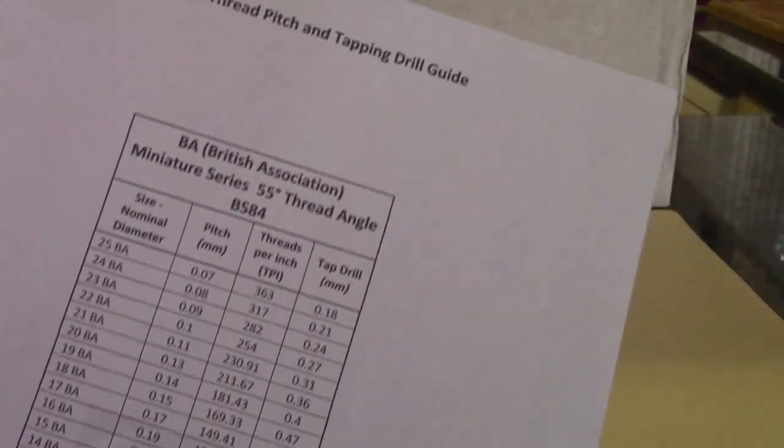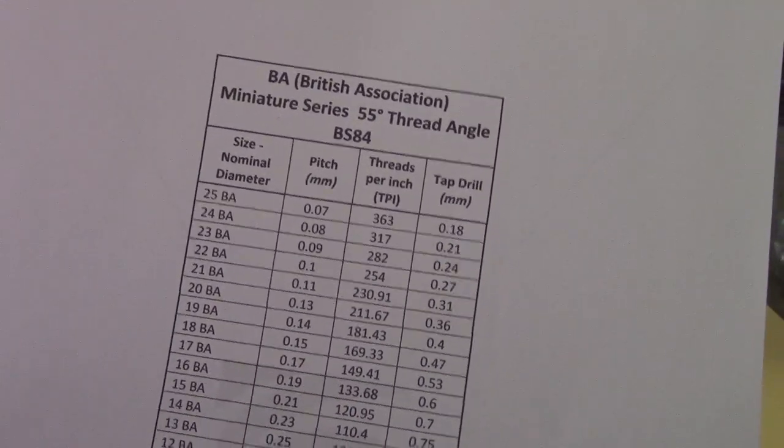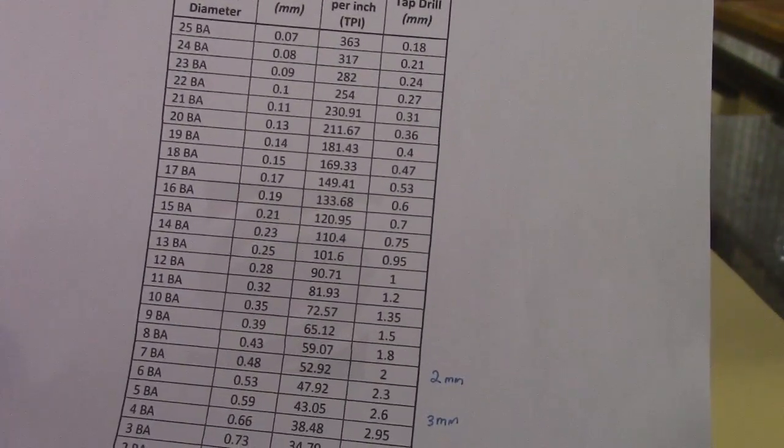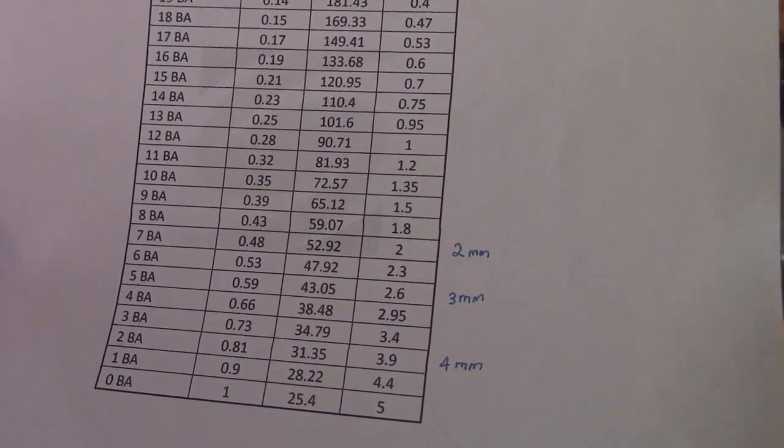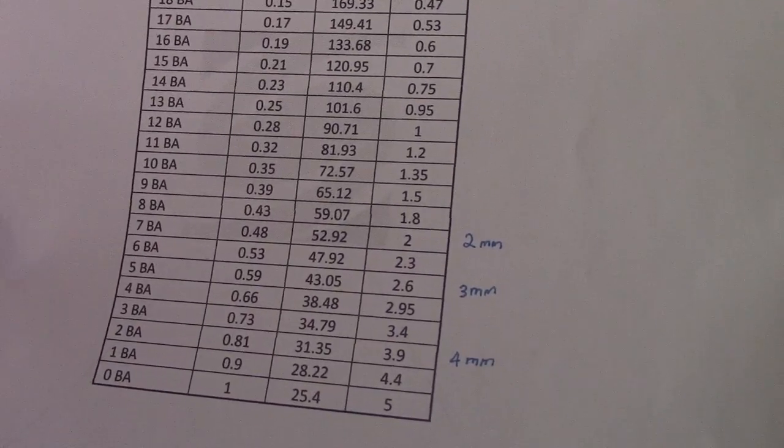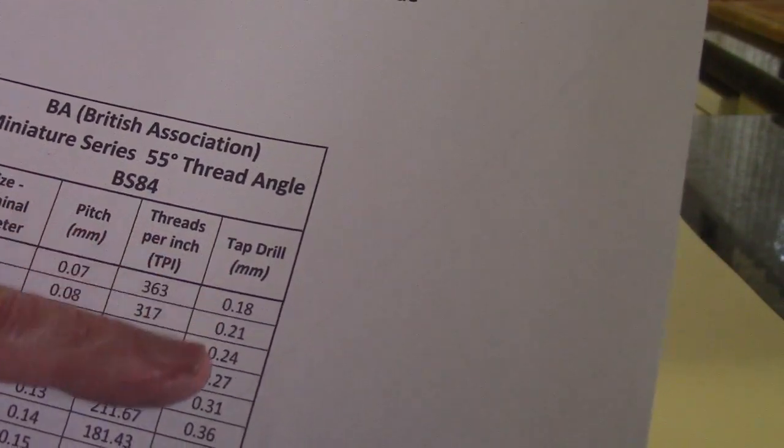The other thing I like to have is a BA tapping chart. I just write down some of the metric equivalent drills that you can use. You'll notice here that this column has the tap drill in millimeters and I just rounded them up down here, but I do have the correct tapping drills in stock so it won't be a problem.